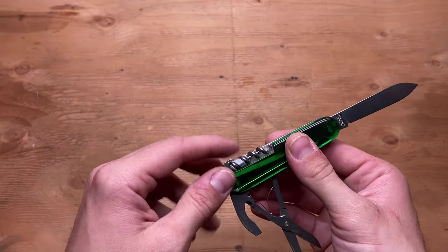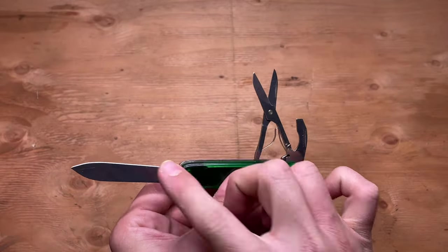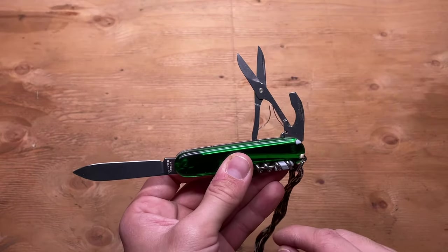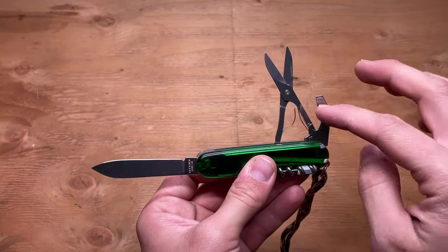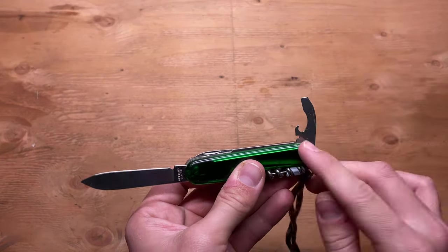And then you have a blade, you have your scissors, and you have a combination dual can opener, bottle opener, and wire stripper.